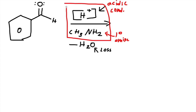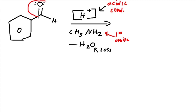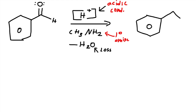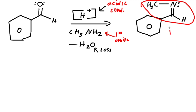The main reagents would be the ones I boxed. To get the product, all we do is look at that double bond oxygen, change it, and put the primary amine on it. It would look like this: the hydrogen is still there, a double bond to nitrogen, and CH₃ with a lone pair. The one I circled is called an imine.